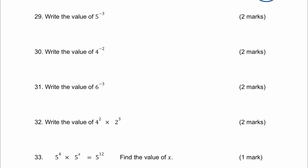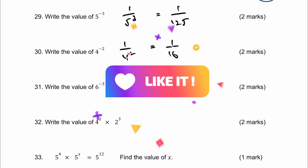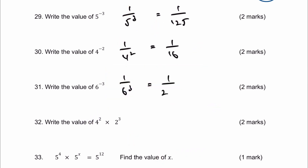If you've got a negative index, it means the reciprocal. So 5 to the power of minus 3 is 1 over 5 to the power of 3, which gives 1 over 125, because 5 times 5 times 5 is 125. Likewise, 4 to the power of minus 2 is 1 over 4 squared, giving 1 over 16. And 6 to the power of minus 3 is 1 over 6 cubed, giving 1 over 216.